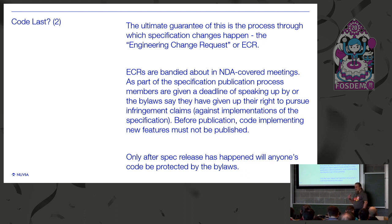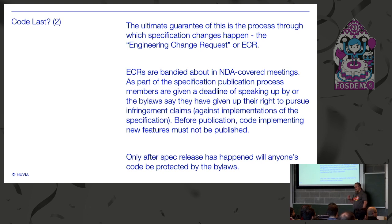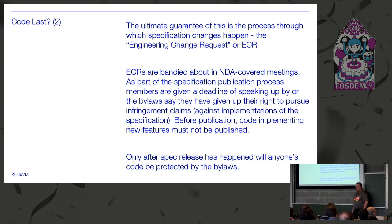As part of the specification publication process, members are given a deadline to speak up or implicitly give up any opportunity to claim infringement on any of their patents in the future. As a result of this, the guidelines have always been that before publication, code implementing new features cannot, under any circumstances, be published. As someone who was working on the 64-bit ARM side to try to get things out in time, this can be more than slightly frustrating. The key point is that really only after the specification has been released is anyone actually protected from the patent nonsense.